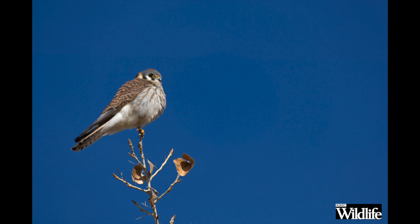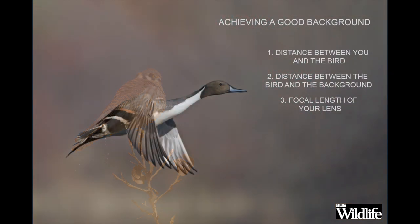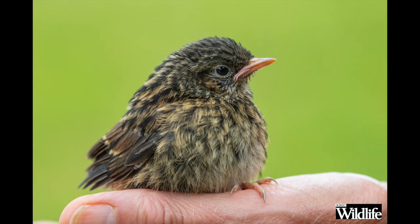If the background is too close, try experimenting — for this American Kestrel I just got down low and shot against the sky. The focal length of your lens is also very important. It's much easier to achieve a blurry background if you're using a long lens, 300mm or longer. My go-to lens for most wildlife photography is 600mm and that helps enormously. It's almost impossible to blur the background with a wide-angle lens because the depth of field is so great. Even if I'm shooting something like a young robin and it's easy to get close, I'll still prefer to use the longer lens to blur the background into that lovely green colour wash.